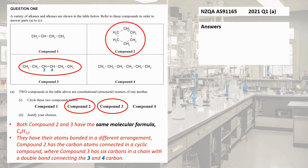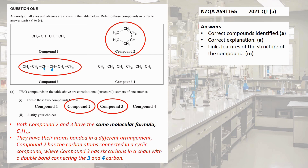Looking at the marking schedule for achievement standard 91165 for 2021: I get an achieved point for identifying the two that are structural isomers of each other. I get another achieved for explaining why — same molecular formula, bonded in different ways. But if I give specific detail about each compound — compound two with carbons linked in a circle, compound three with carbons all in a line — that detail takes it to a merit point and earns us a lot more marks.